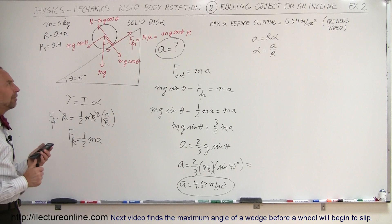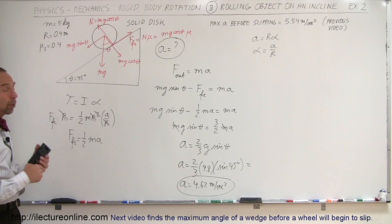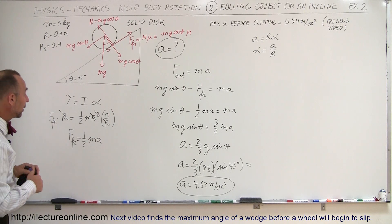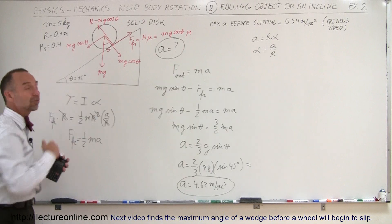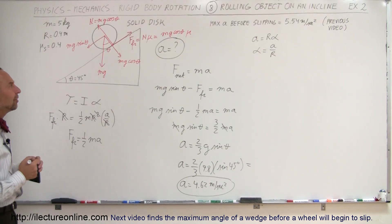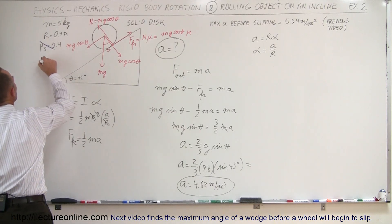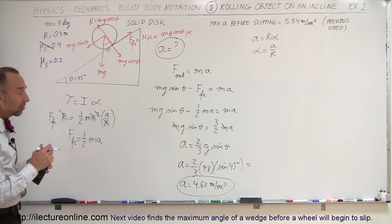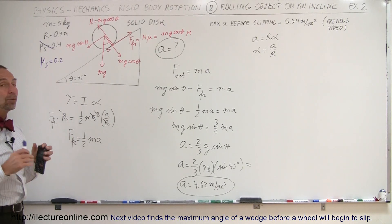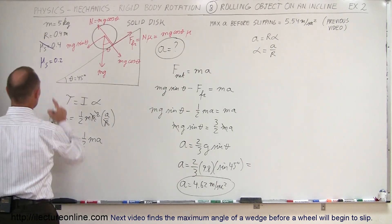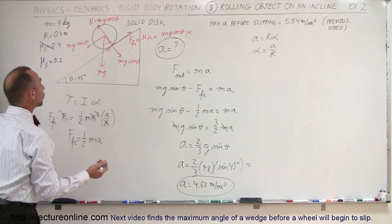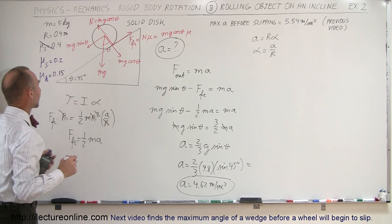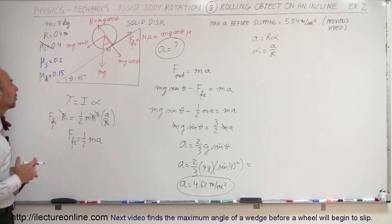Now a little change: what if the coefficient of friction was only 0.2 instead of 0.4? That's small enough that the wheel would actually slip, because the friction force would not be sufficient to maintain rolling without slipping. In that case with μ_static = 0.2, we need to use the kinetic friction coefficient — let's say μ_kinetic = 0.15, which applies when the two surfaces are sliding over each other.